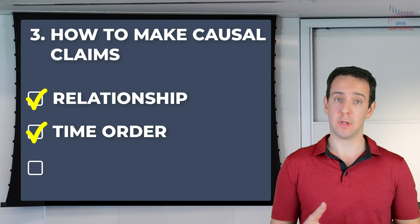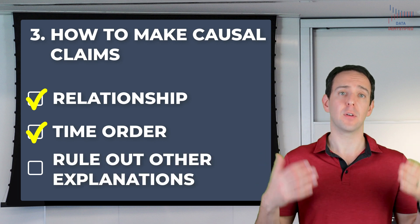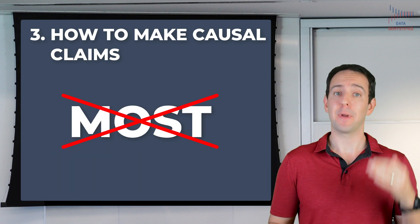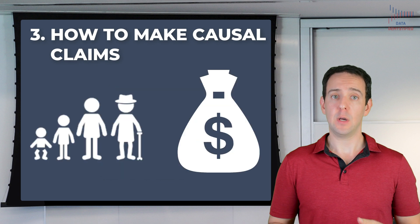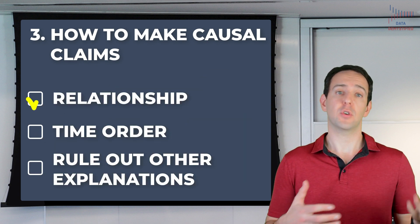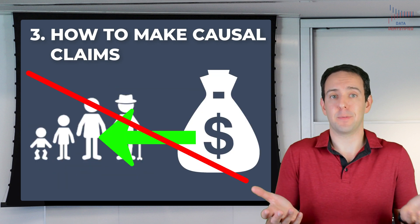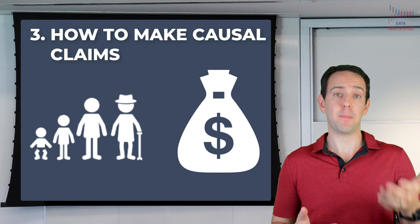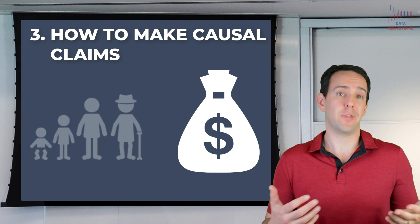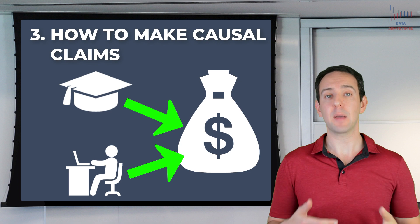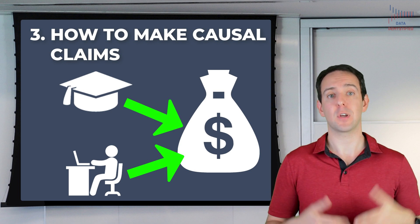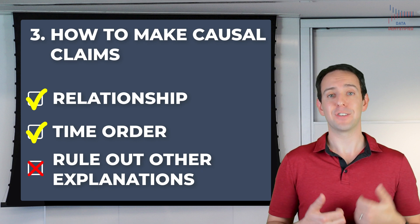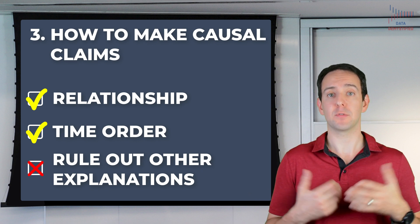Finally, and most critically, you have to rule out every single other possible explanation for the observed relationship — not just some of them, not just most of them, but every single one. We already saw why this is needed in the case of age and wealth. Age and wealth are related, and we can be pretty confident that wealth isn't causing age, so time order isn't an issue. But wealth might not be caused by age, but rather by other things like education and work experience. Since we can't be sure those aren't responsible for wealth, we can't make the causal claim that age causes wealth, since something else might be the real driver.